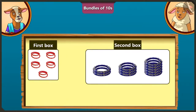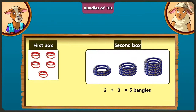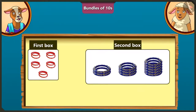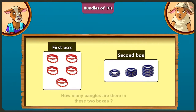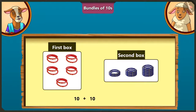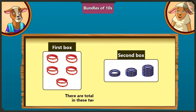Counting the second box the same way: two bangles in the first row plus three in the second row gives five, and adding five bangles in the third row gives ten bangles total in the second box. So there are ten bangles in both boxes. Adding ten and ten gives twenty — there are twenty bangles in total in these two boxes.